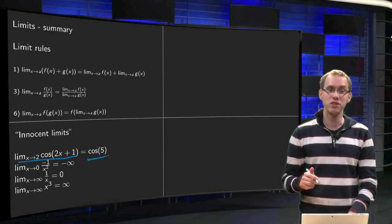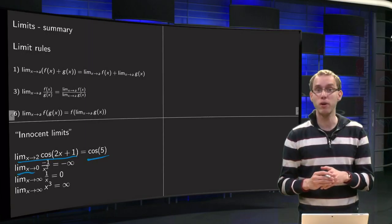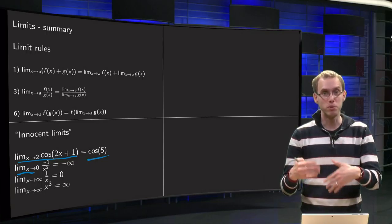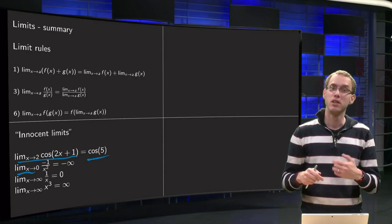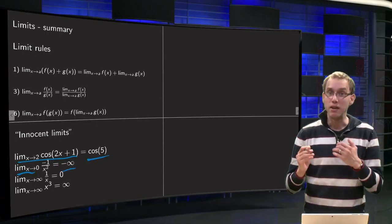Slightly less innocent, what happens if you take x to 0 in the function minus 1 over x squared? Well, then if you take x closer and closer to 0, then your function becomes bigger and bigger, takes bigger and bigger negative values, so that we say that in that case our limit equals minus infinity.